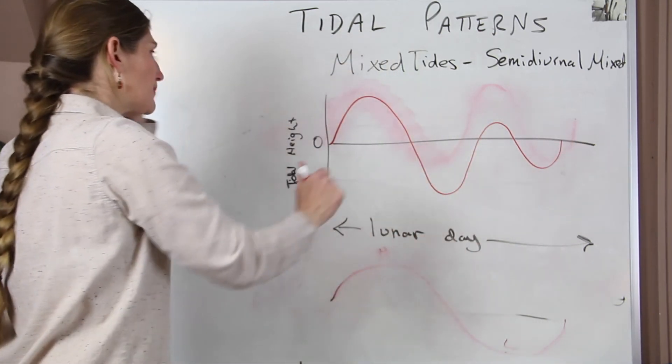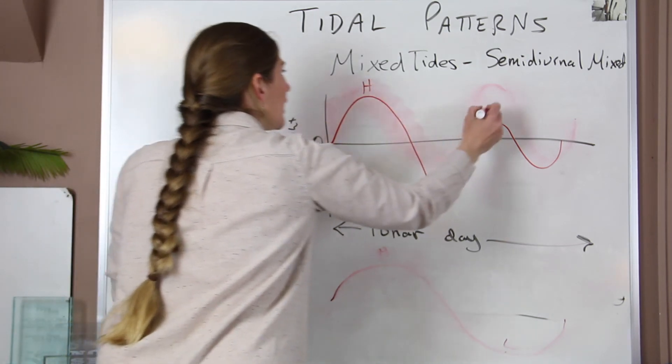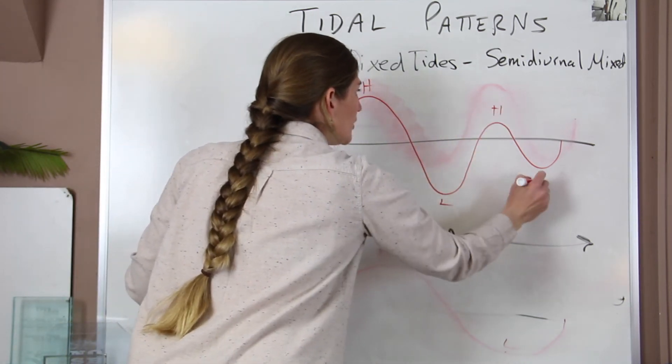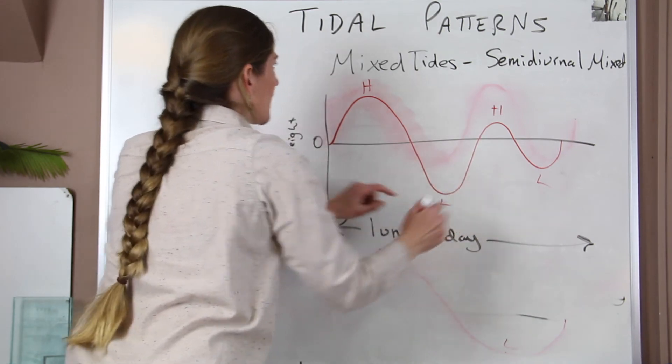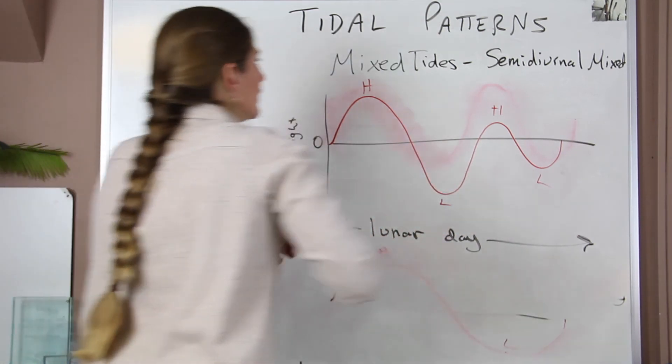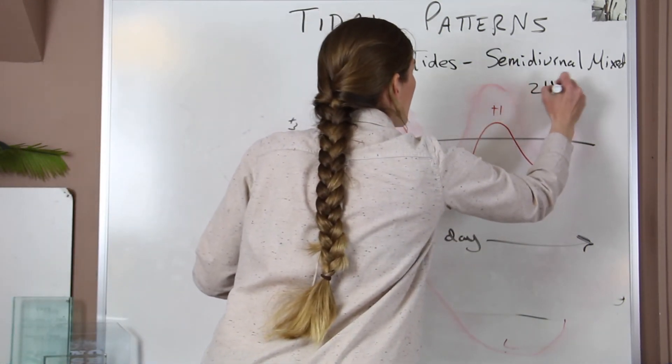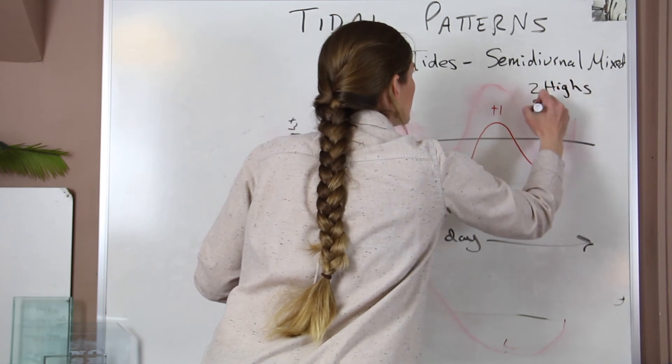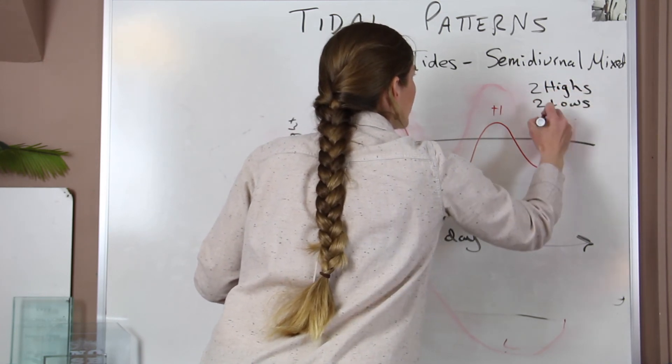Okay, so in that same period we have two highs and two low tides, but this time they're of different sizes. So we have two highs, two lows, and there are different sizes.